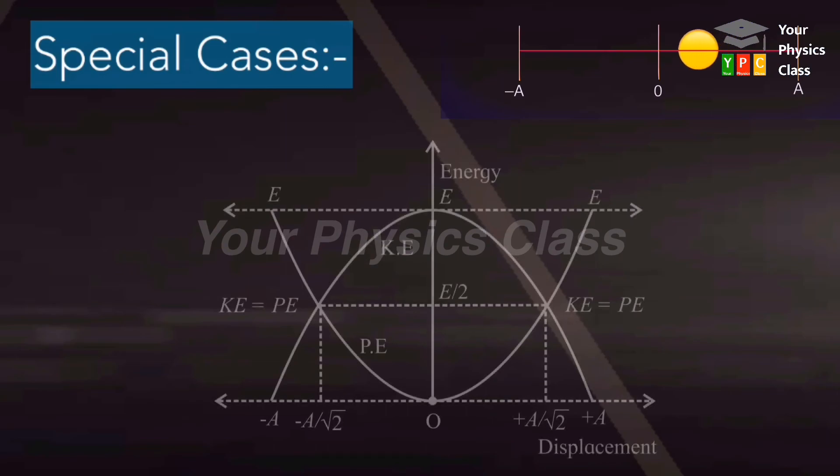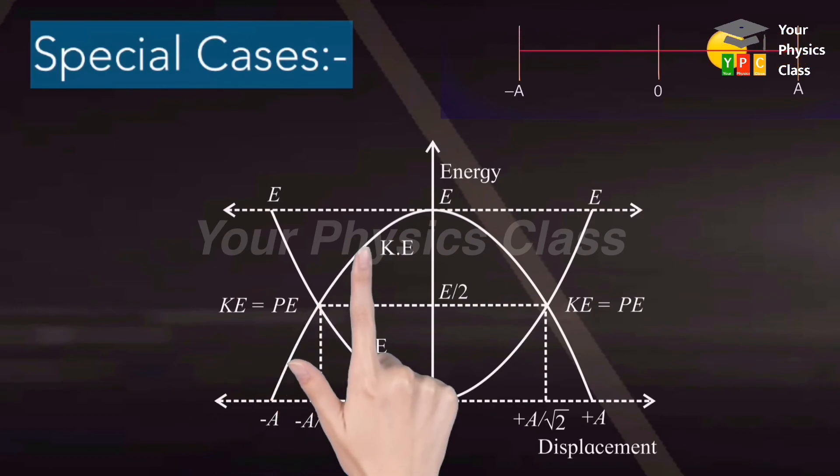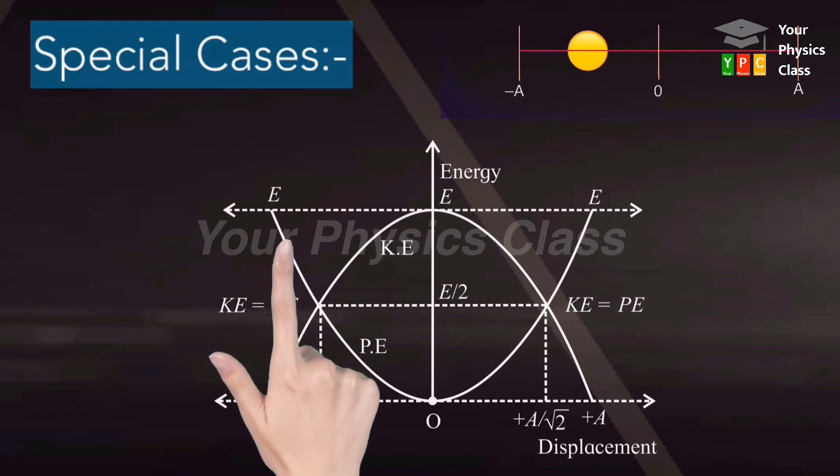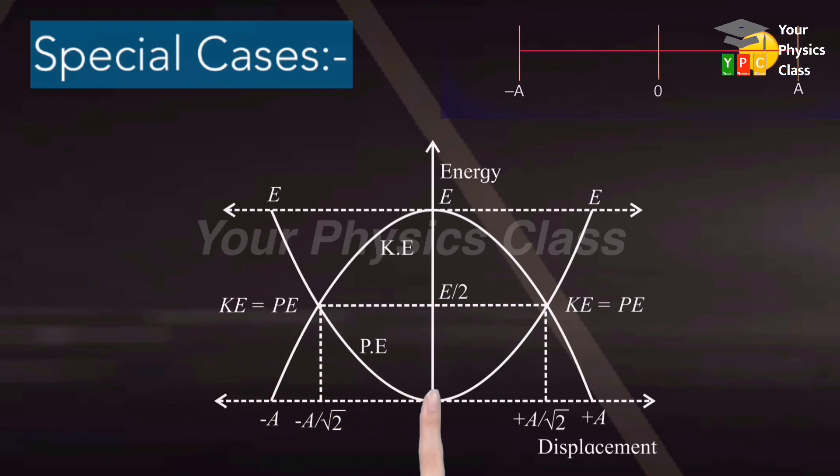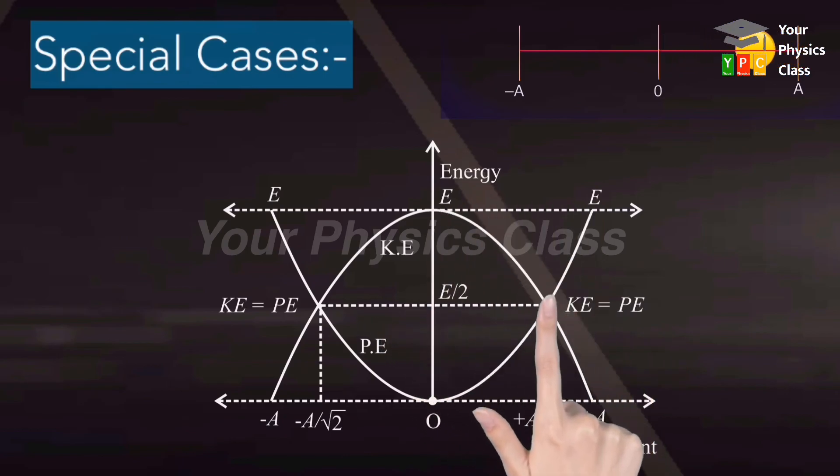The variation of kinetic energy and potential energy with displacement is shown on your screen. The graph shows that as kinetic energy increases, potential energy decreases, and when potential energy increases, kinetic energy decreases.